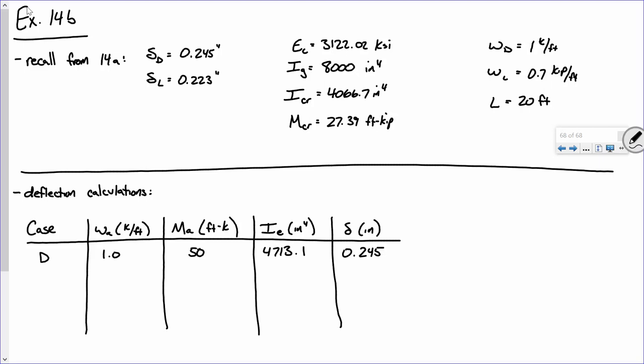The next case we did was dead plus live. What was our load? 1.7. How did we get the 1.7? There's a reason I asked that. What was the resulting moment? 85. That moment yielded an effective moment of inertia of what? And then a deflection of what? There is a reason why I did that.